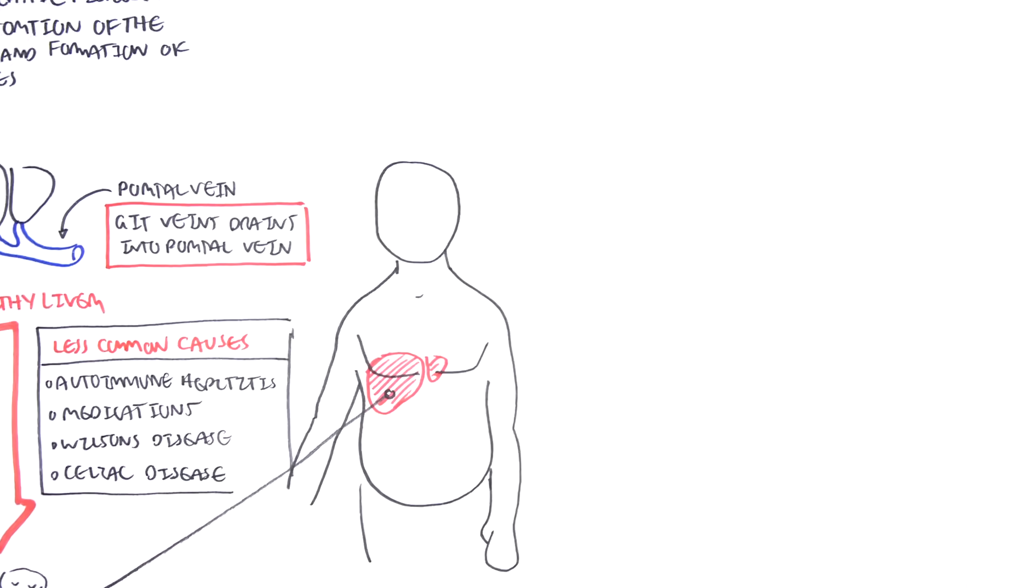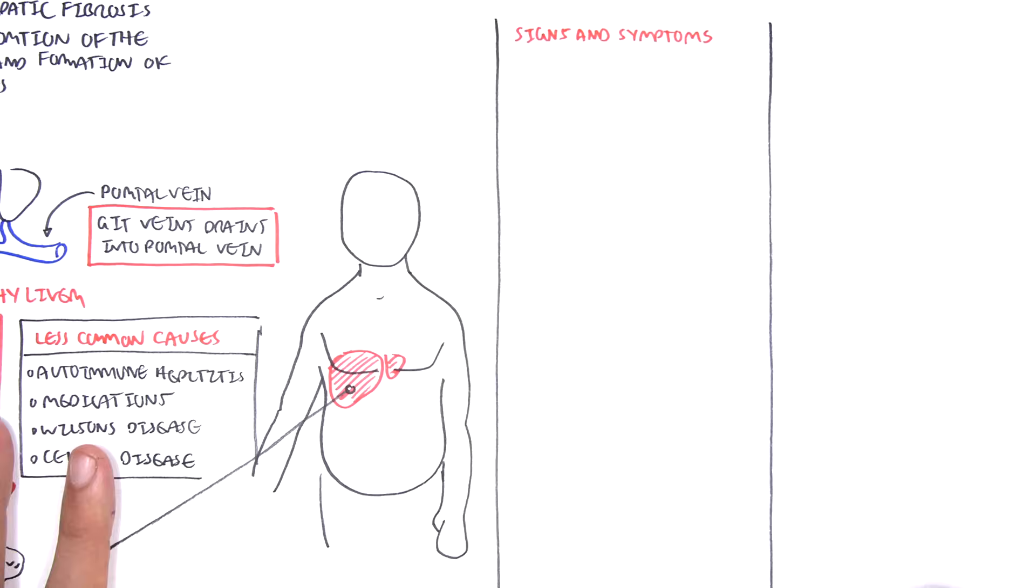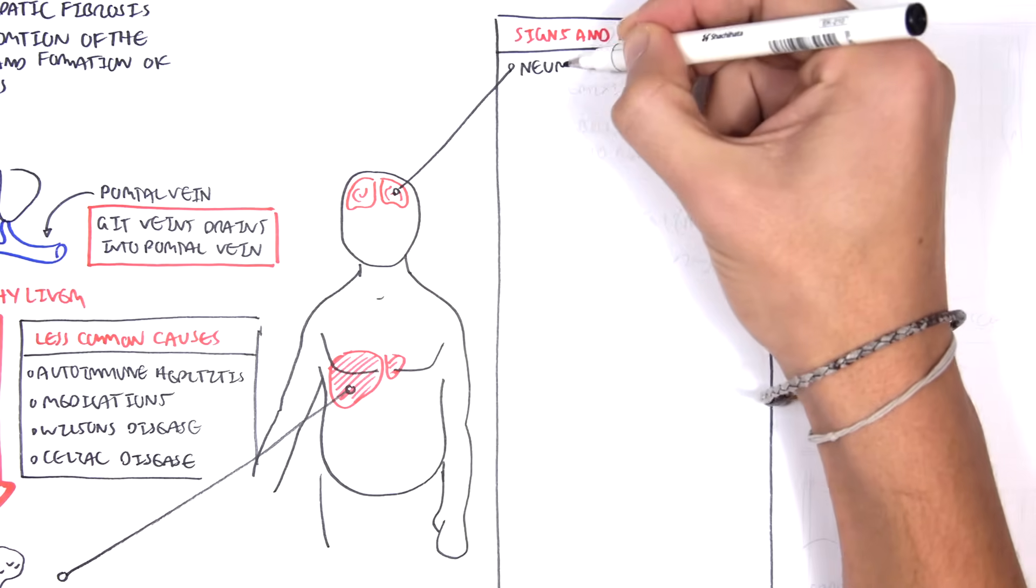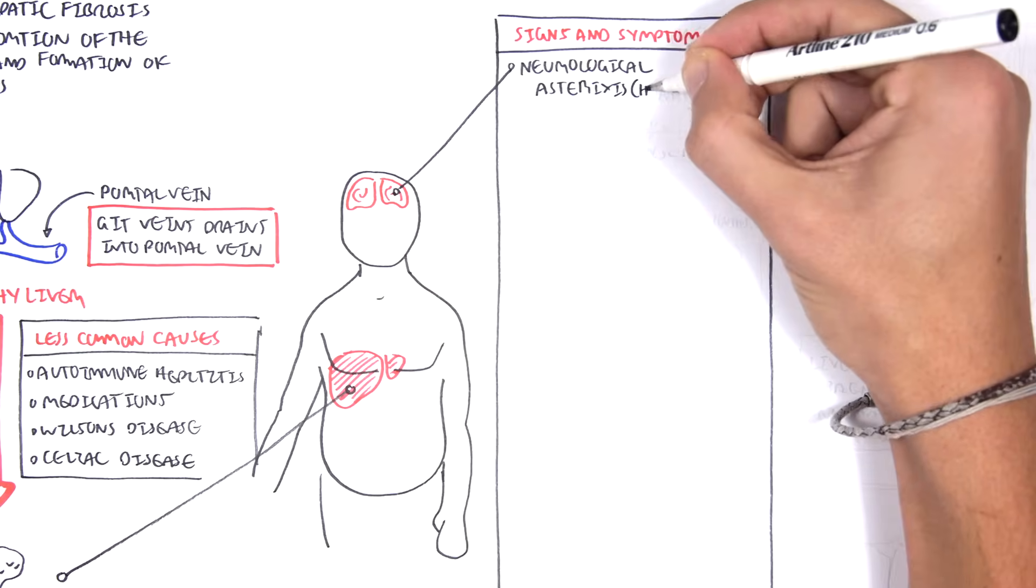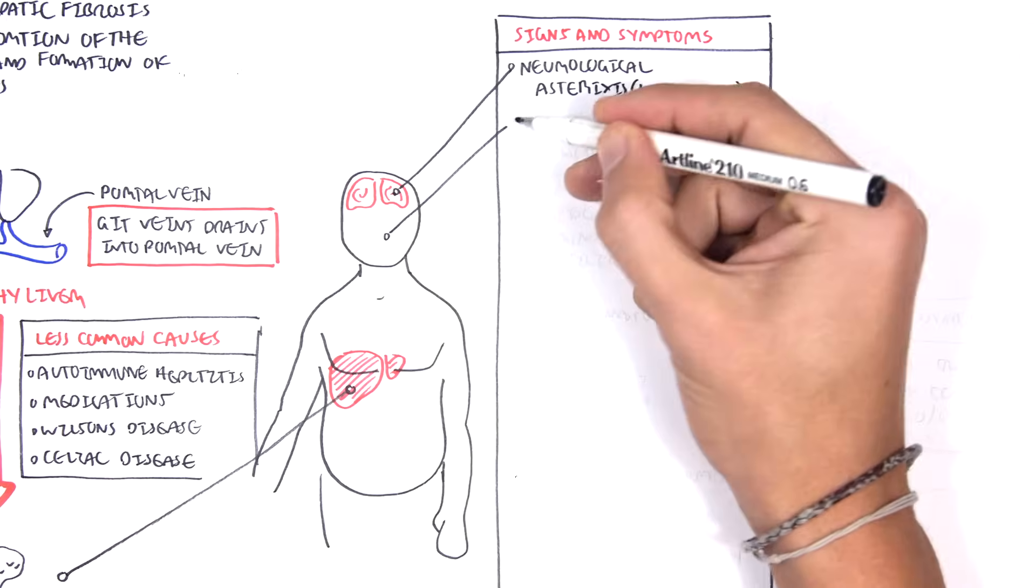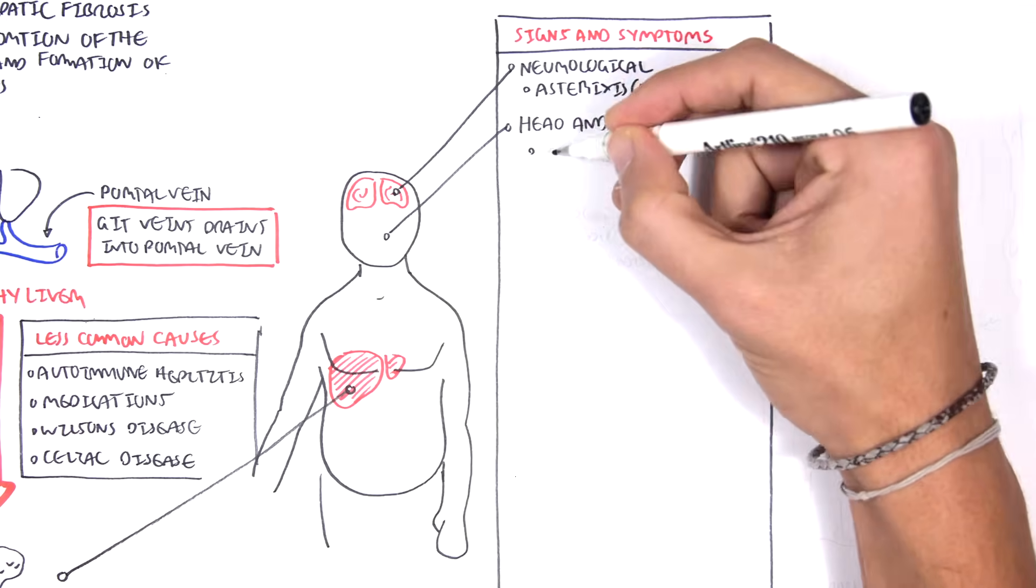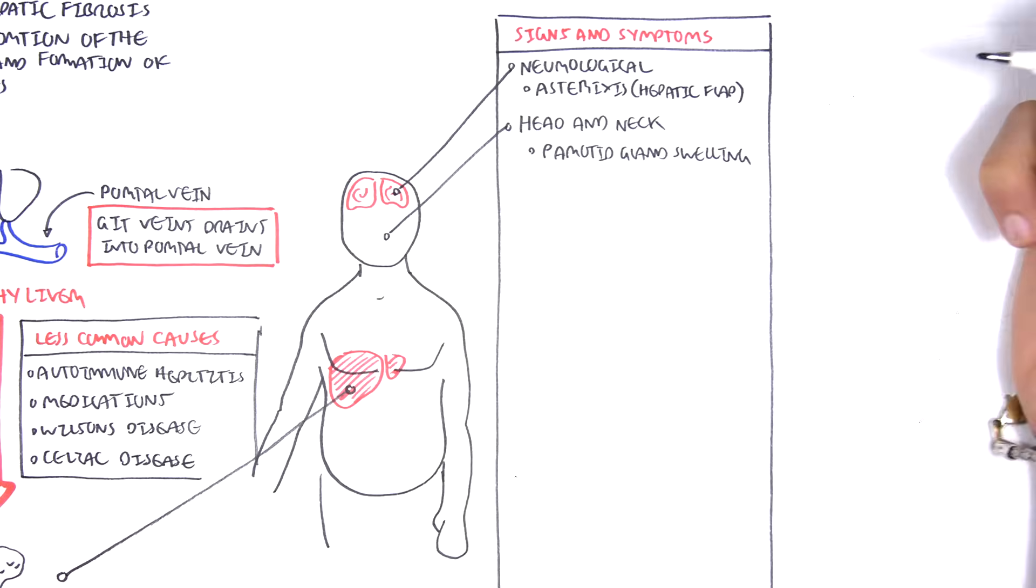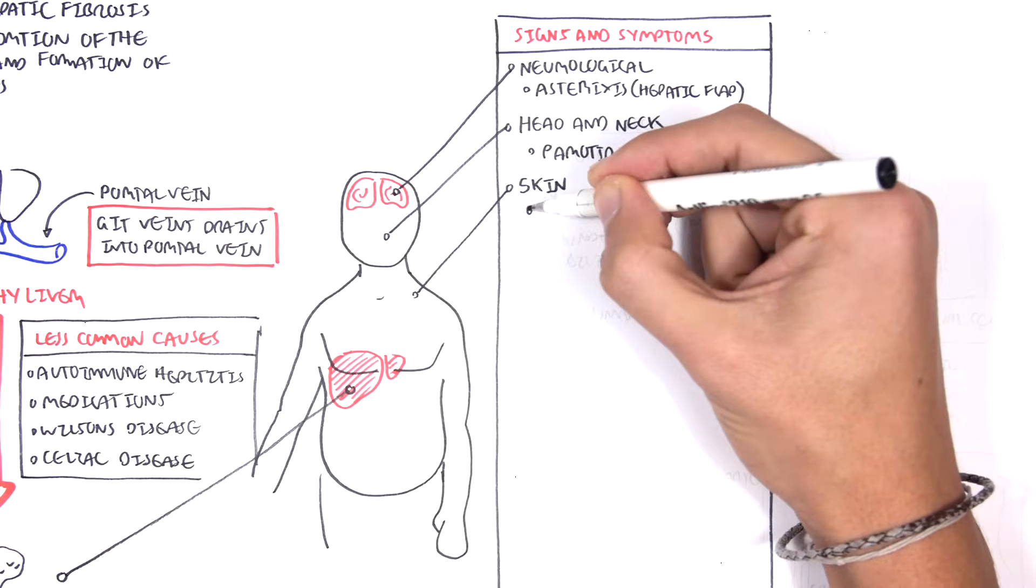Signs and symptoms of liver cirrhosis. The neurological signs include asterixis, which is the hepatic flap. Head and neck involvement includes parotid gland swelling. This usually involves alcohol.